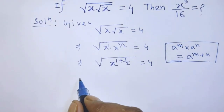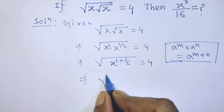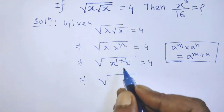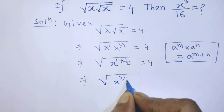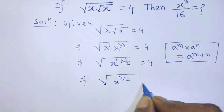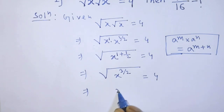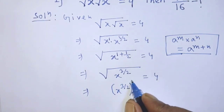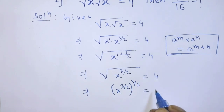After that, it will be square root, and under this square root it will be x to the power 3 over 2, is equal to 4. This becomes x to the power 3 over 2, whole to the power 1 over 2, is equal to 4.